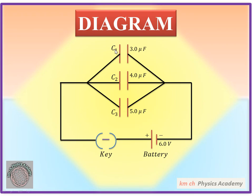The capacitors are: C1, which is 3.0 microfarad; C2, which is 4.0 microfarad; and C3, which is 5.0 microfarad.